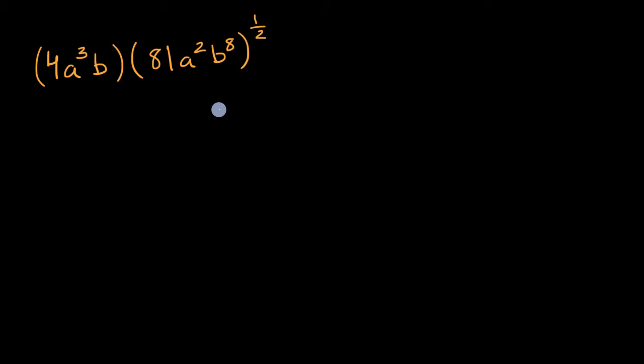All right, now let's work through this together. So we have this expression times this expression, but then this expression is raised to an exponent. So order of operations would tell me, let's do the exponent first before we actually multiply things. And how do we simplify this? We have a bunch of stuff that is raised to an exponent.